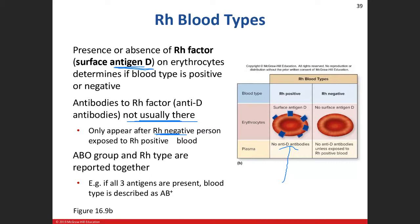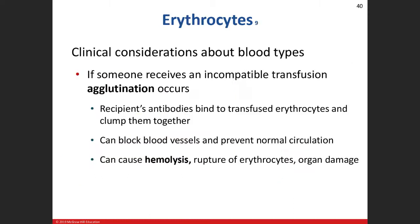When we combine the ABO group and the Rh factor, that's where we get blood types like AB positive or A positive. The Rh factor's positive and negative designation comes from whether you have the antigen D present on your red blood cells.